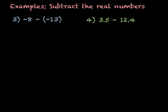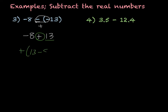For these next two examples, we're going to be subtracting real numbers. I have negative 8 minus a negative 13. A double negative changes to a positive, so what I have is negative 8 plus 13. My bigger number is a positive number, so positive 13 minus 8 is 5 — a positive 5. That would be my final answer: 5.